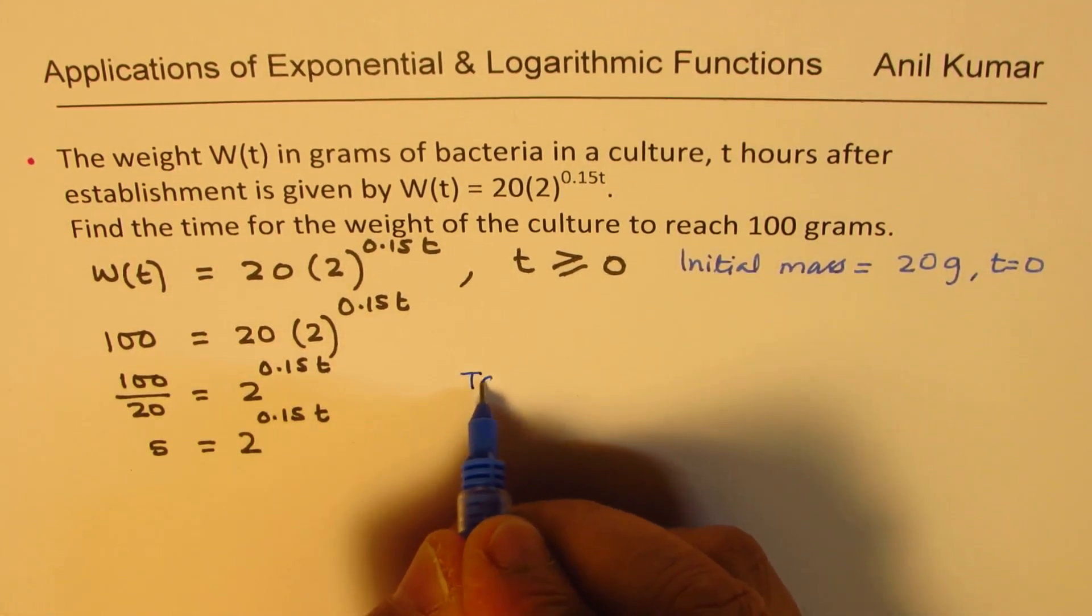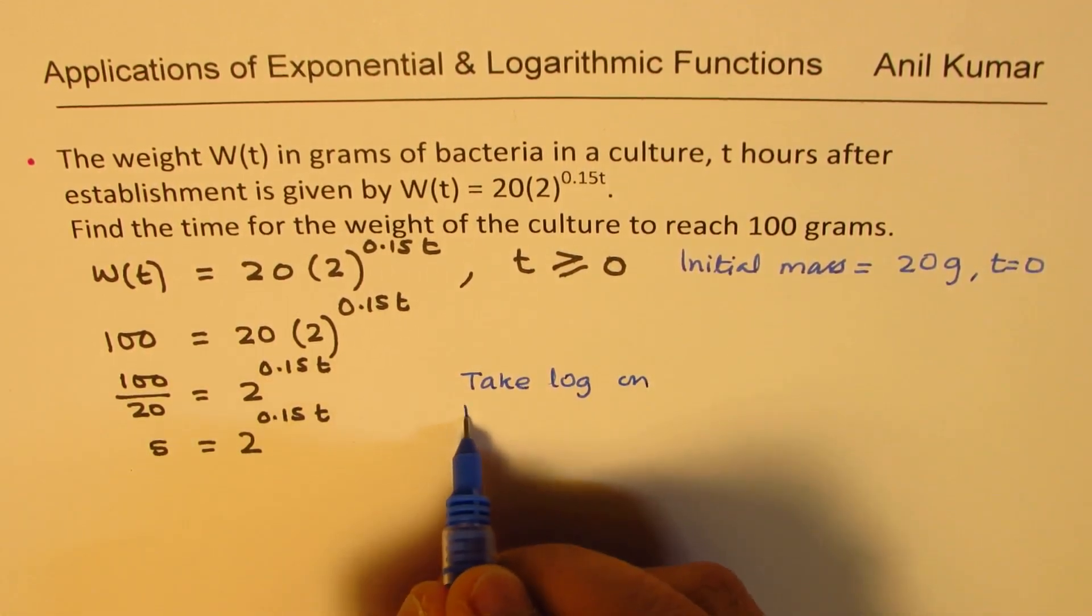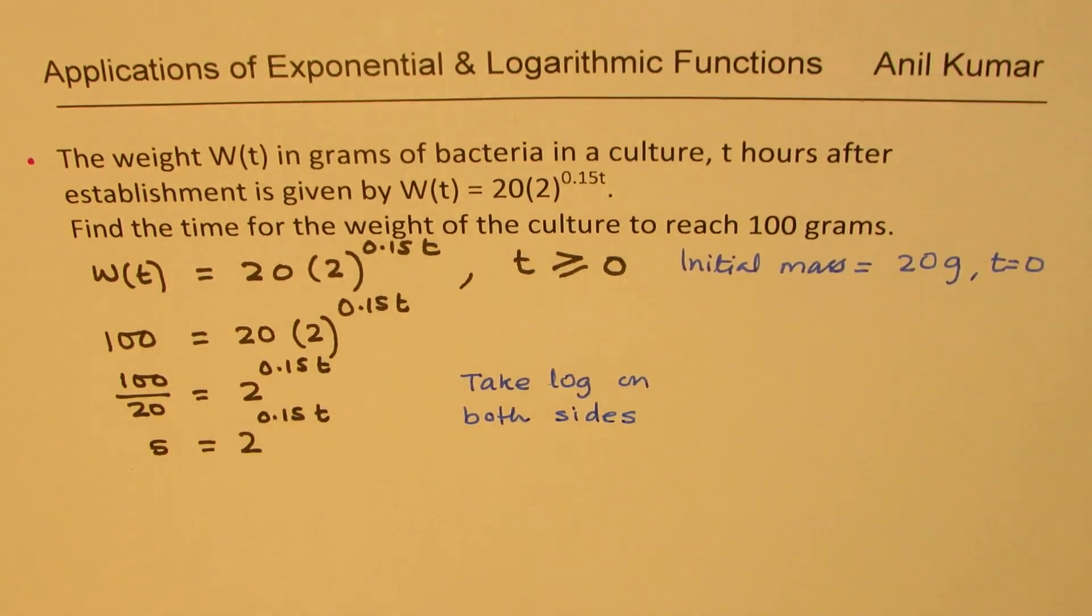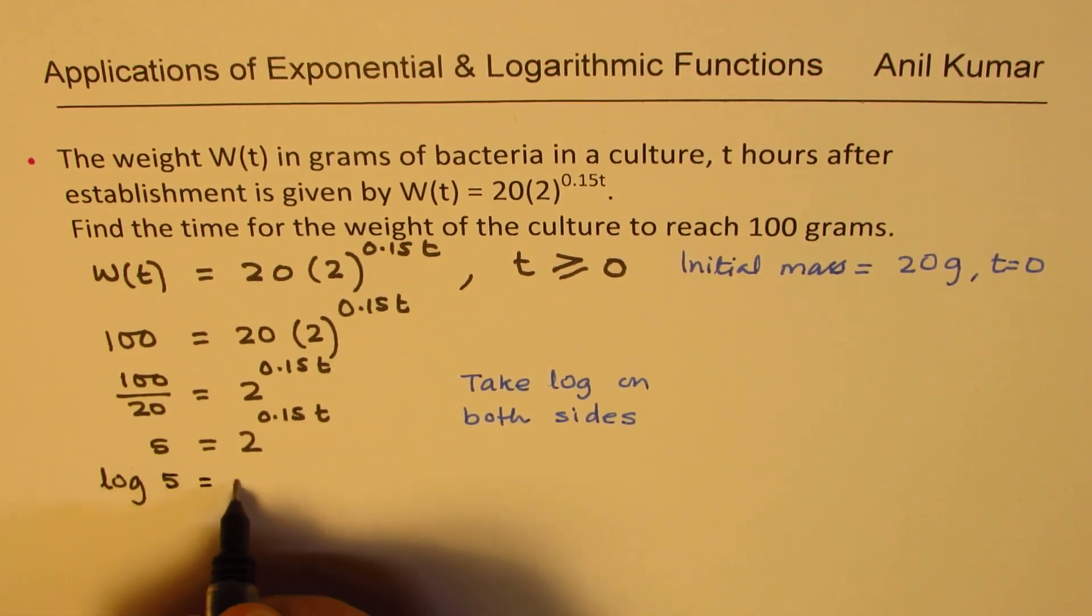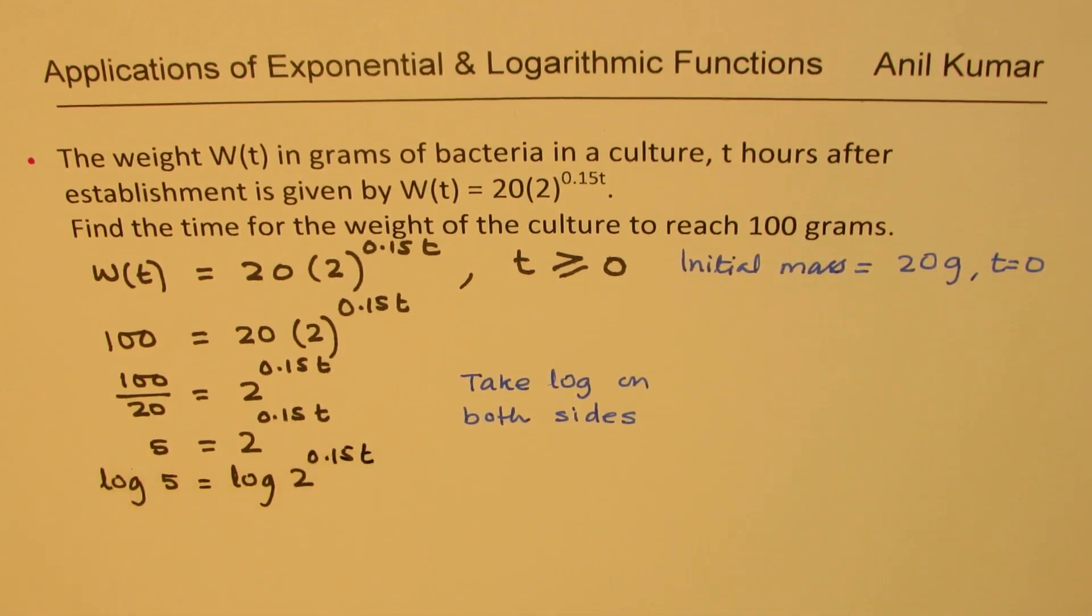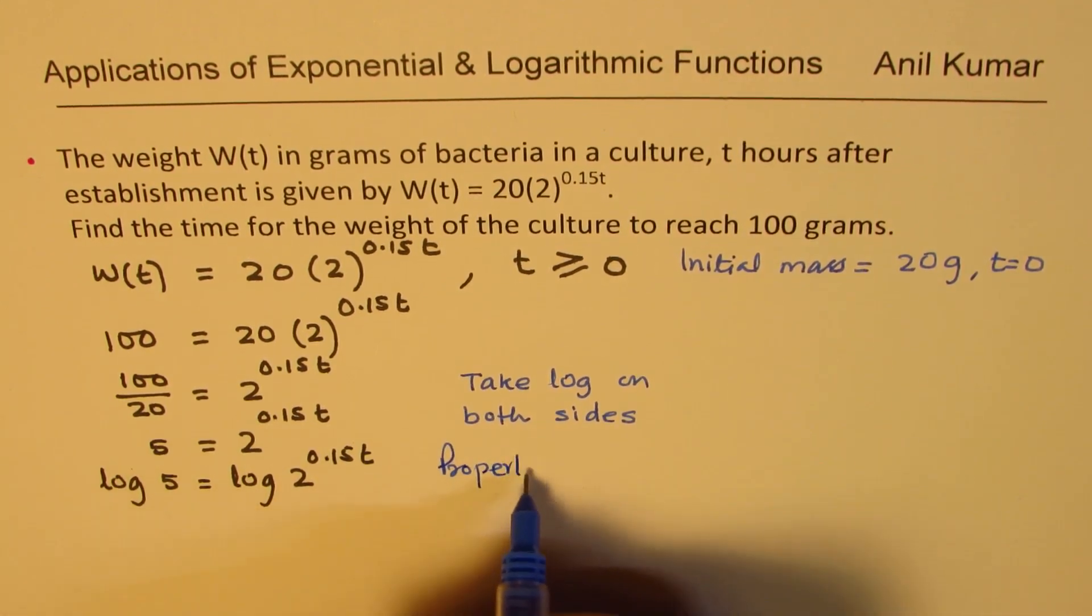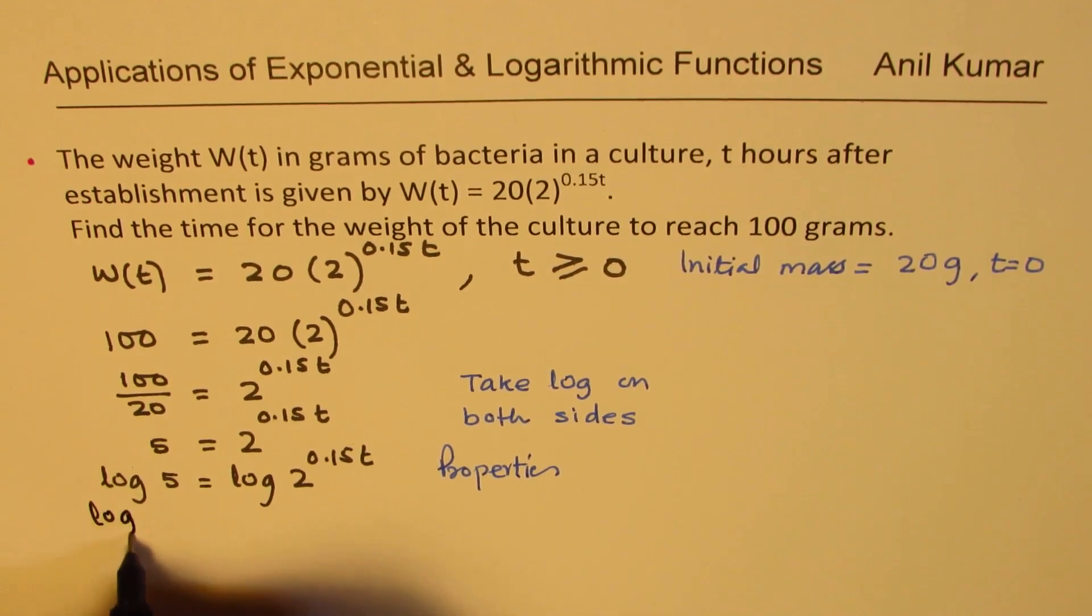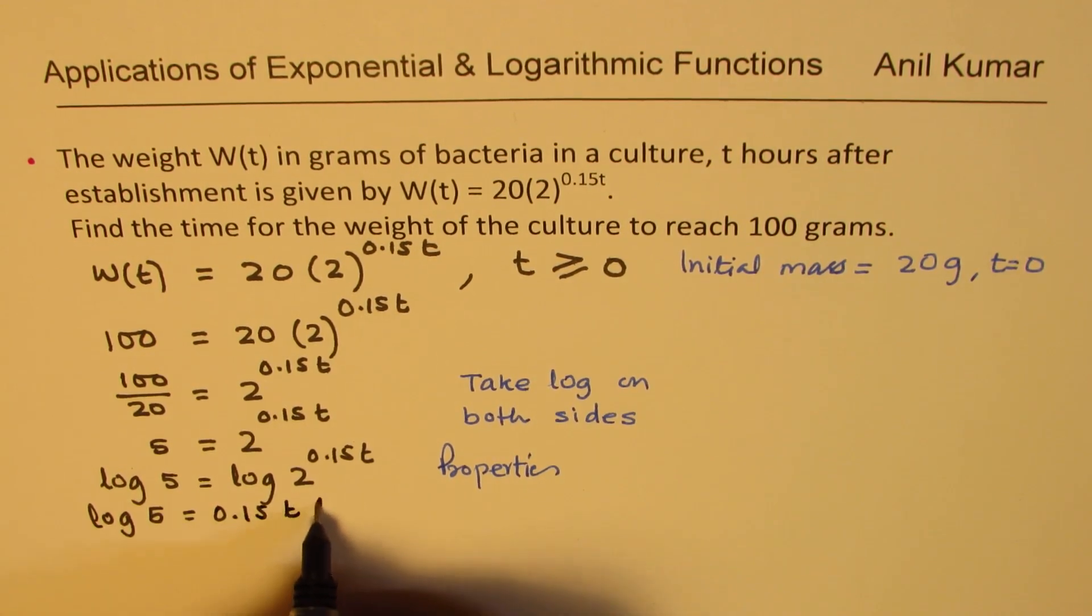Now the step is take logarithms on both sides. When you take logarithms on both sides, we get log of 5 equals log of 2 to the power of 0.15t. Using the properties of log, we can now write this as log of 5 equals 0.15t times log 2.